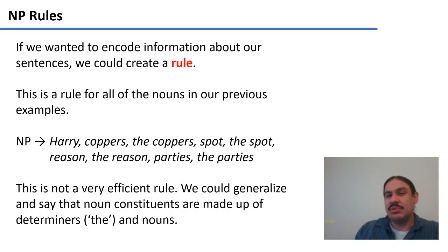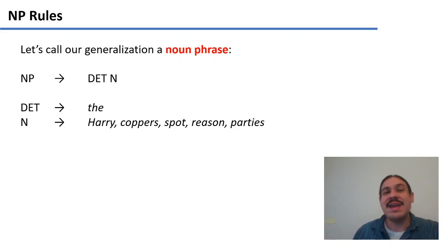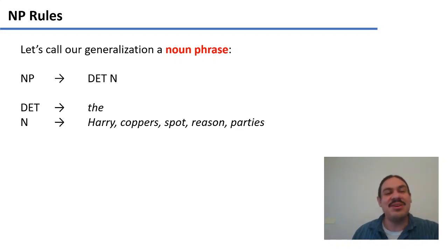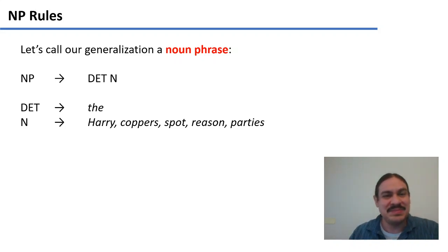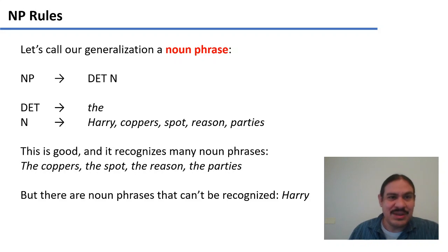Let's try to make a rule to explain the structure of a noun phrase. How about this? A noun phrase is composed of a determiner and a noun. Determiners are the set of one element, which is 'the', and nouns are the set of five elements: Harry, coppers, spot, reason, and parties. For example, we could have 'the coppers', where the noun phrase is composed of the determiner 'the' and the noun 'coppers'. We could have 'the parties', where the noun phrase is made up of the determiner 'the' and the noun 'parties'.